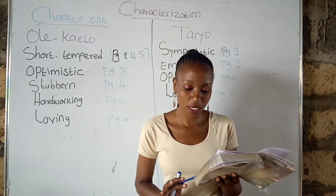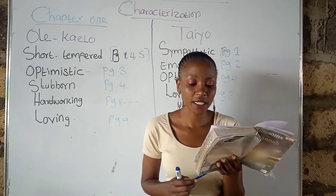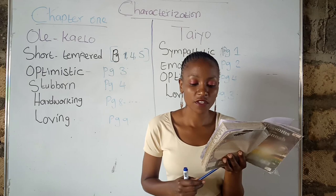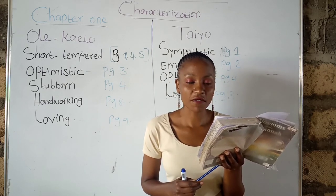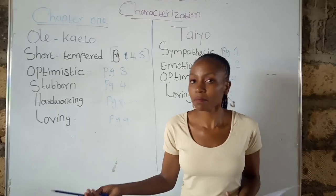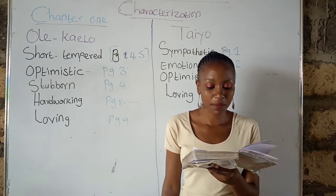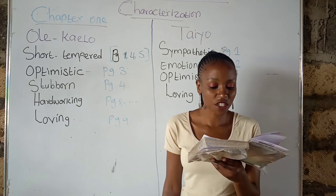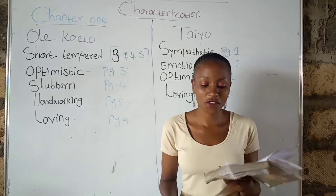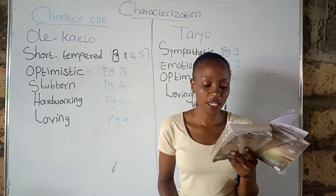Again on page one, the second-last paragraph, Tayo felt 'a mild but quite genuine pang of sympathy for the poor fellows down there,' because she knew the sting of her father's tongue. Another evidence supporting Ole Kyalo being short-tempered is on page four, last paragraph in the middle: 'When she heard him yell at one of the workers, a cold note of anger and tension tightened in the pit of her stomach.'